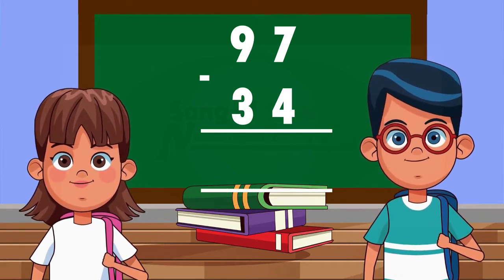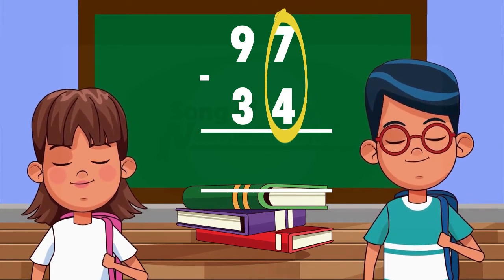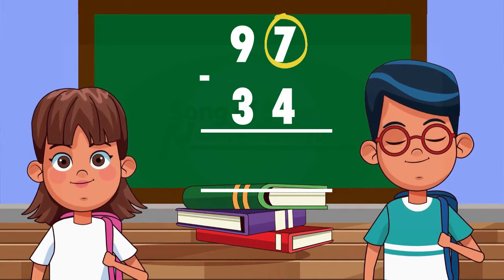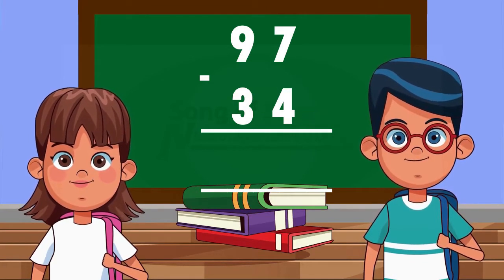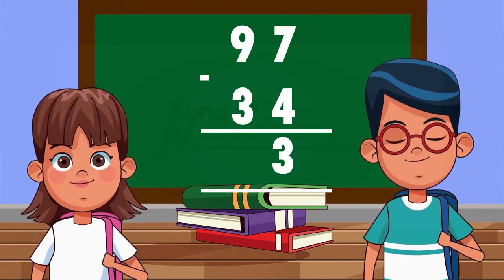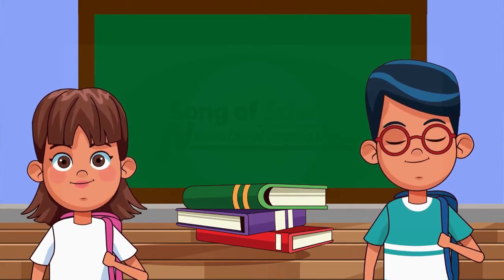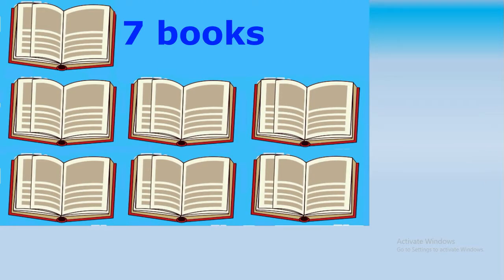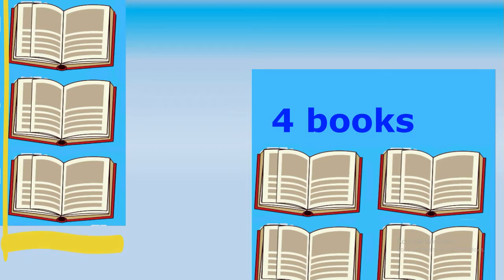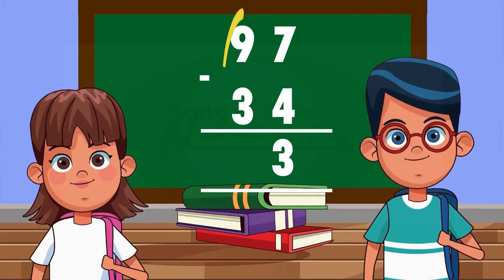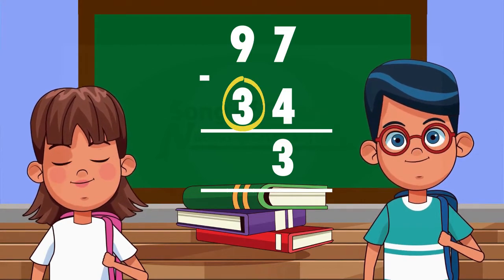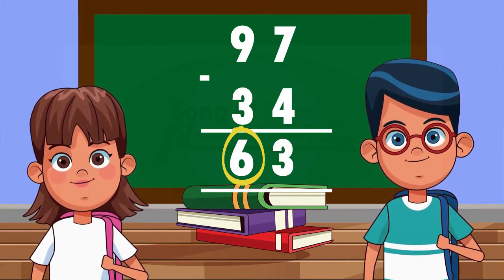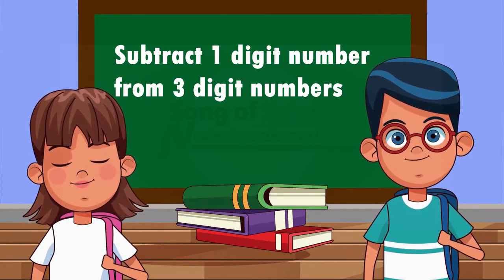We begin with ones. We subtract four from seven. We say seven minus four equals three. We said we need to use real objects. For example, seven books minus or take away four books equals three books. We then go to the tens. Nine minus three equals six.